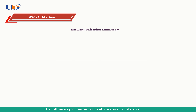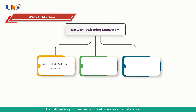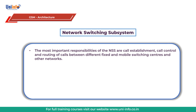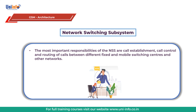Our next topic is network switching subsystem (NSS), also known as GSM core network. It provides basic call setup, call management and mobility to the users. Its components are mobile switching center (MSC), home location register (HLR), visitor location register (VLR), authentication center (AUC), and equipment identity register (EIR). The most important responsibilities of the NSS are call establishment, call control and routing of calls between different fixed and mobile switching centers and other networks.